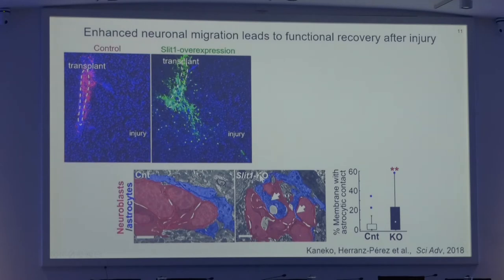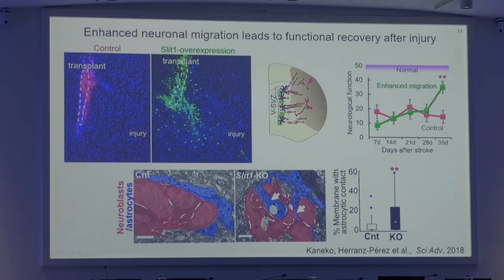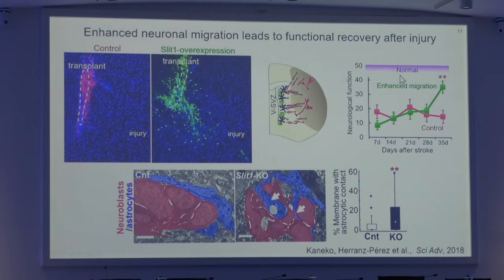Conversely, we also found that in SLIT1 knockout mice studied by electron microscopy, astrocytes are irregularly inserted within chains of migrating new neurons, making excessive contact with these cells compared to the wild-type mouse. Furthermore, the overexpression of SLIT1 induced a significant improvement in neurological function of these animals five weeks after injury, and these improvements were sustained for at least an additional five weeks, suggesting that this enhanced migration can induce at least a partial recovery in mouse stroke models.